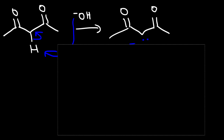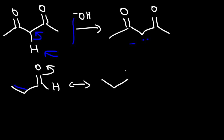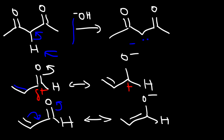To understand why both carbon atoms are electrophilic: the carbonyl carbon is electrophilic because a resonance structure places a positive charge on it. To show that the beta carbon is electrophilic as well, we draw the resonance structure for that molecule, which places a positive charge on the beta carbon, confirming its electrophilicity.